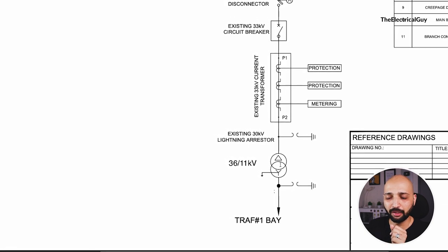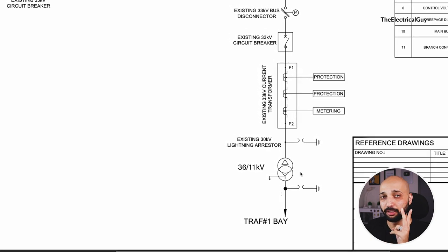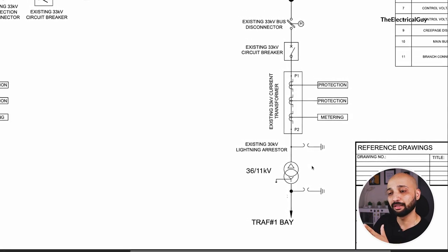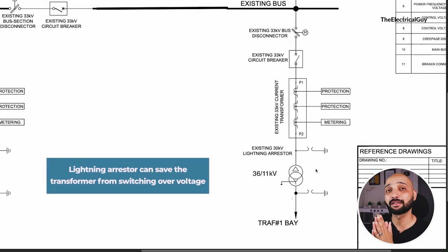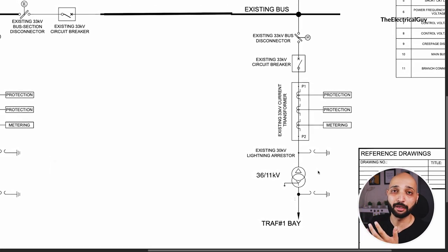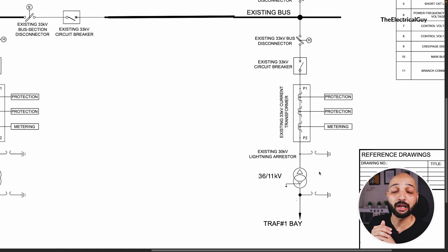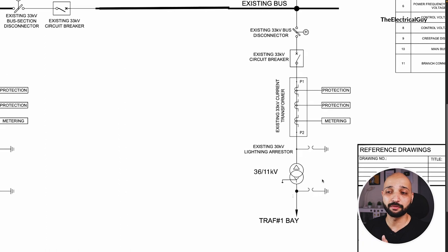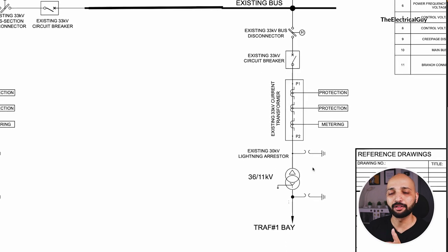One thing to notice is that we have a transformer with a lightning arrester placed both before and after it. There is no strict compulsion to use lightning arresters on both sides, but it is advantageous because the lightning arrester can protect the transformer from switching overvoltages that may appear in the system. Since the transformer is one of the most expensive pieces of equipment, it is worth protecting it from switching overvoltages, which is why lightning arresters are used on both sides.